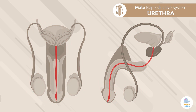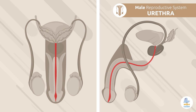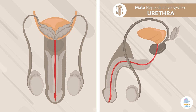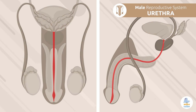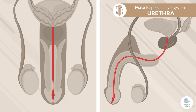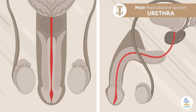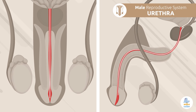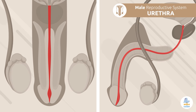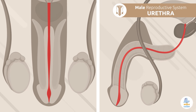Urethra: the urethra is an organ shared by the excretory and reproductive systems. This is where urine is expelled, but it also allows spermatozoa, among other things, to be expelled outside the body.